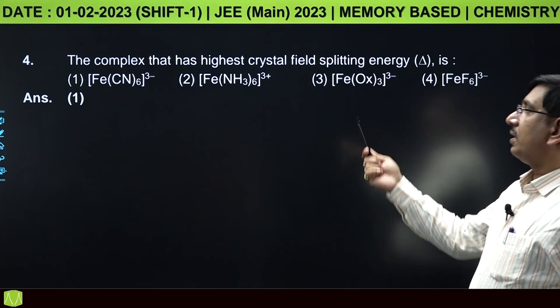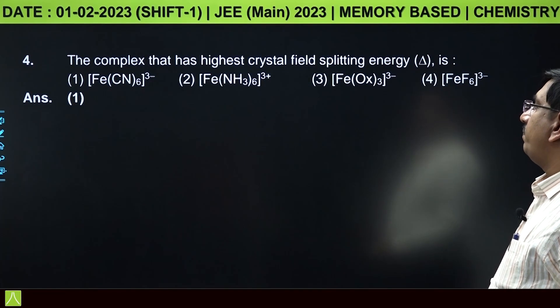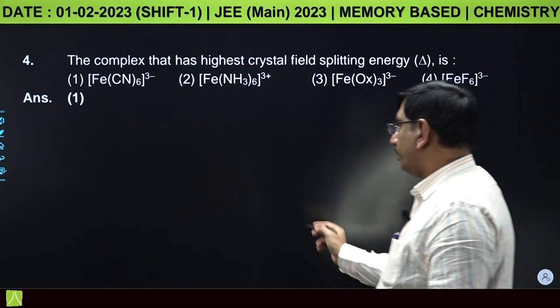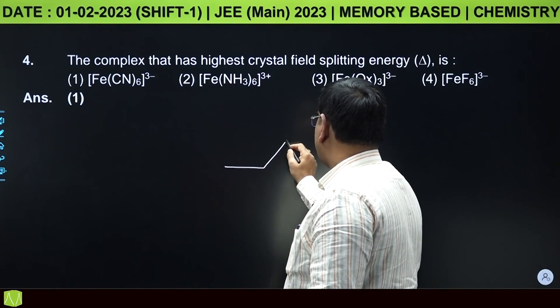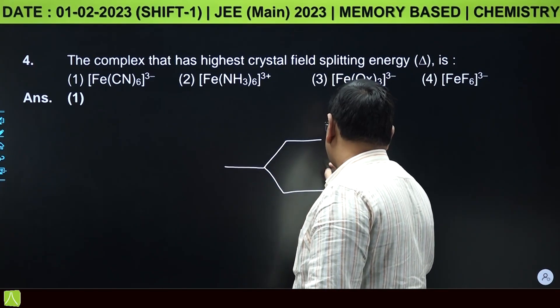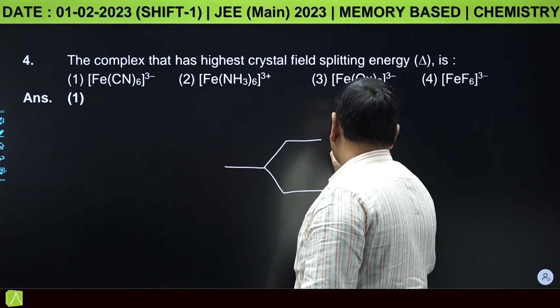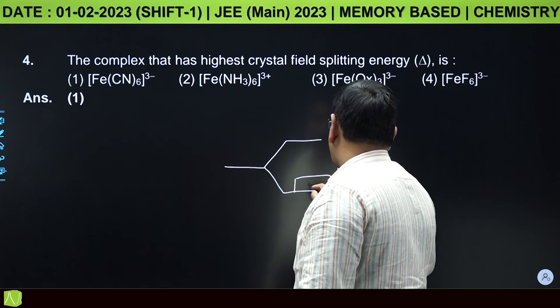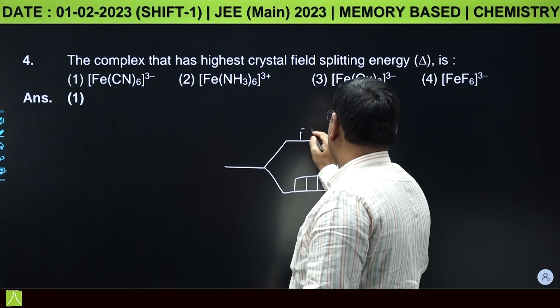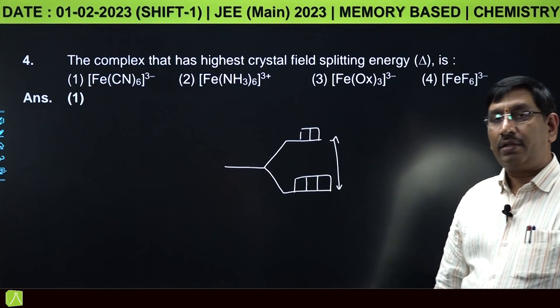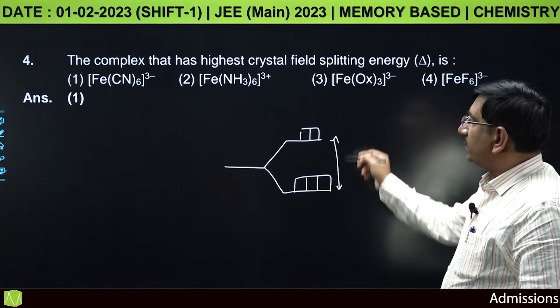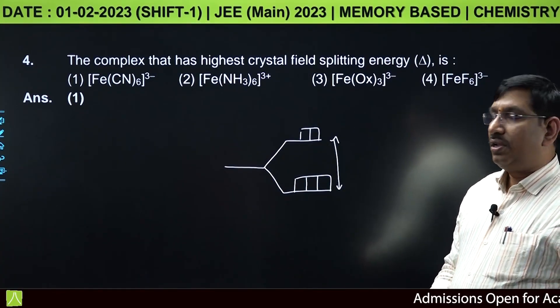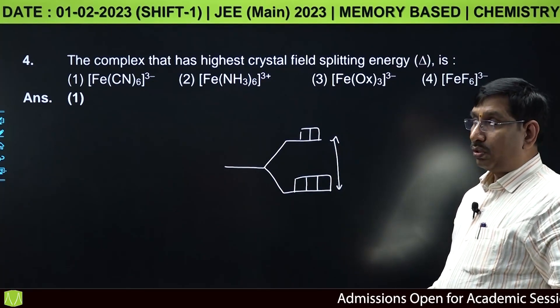The complex that has highest crystal field splitting energy. Which ligands have maximum d-orbital splitting? Generally in presence of strong field ligands, this splitting will be more.